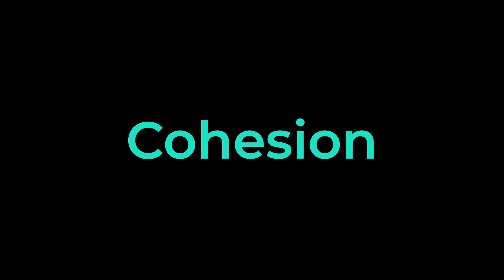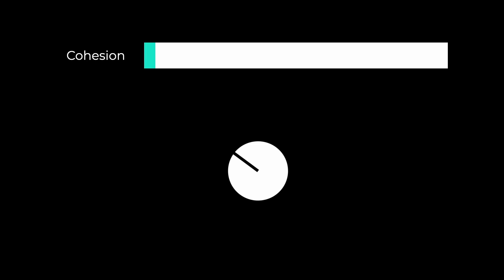What is cohesion? While coupling measures how different modules and classes relate and connect to each other, cohesion is about a single class on its own — how well its internals work together, how well they fit, and whether they share the same goal. And just like coupling, we measure cohesion on a scale from low cohesion to high cohesion, also called strong cohesion.